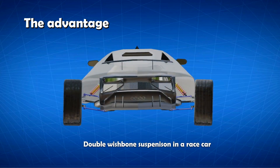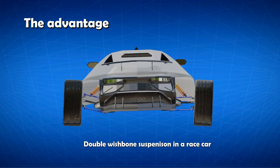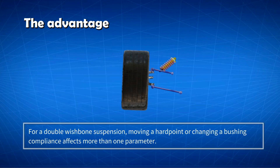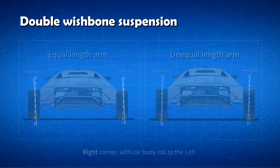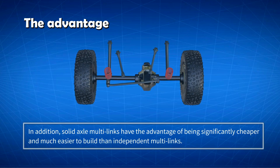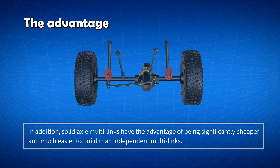This is a significant difference from double wishbones. For a double wishbone suspension, moving a hardpoint or changing a bushing compliance affects more than one parameter. In addition, solid axle multi-links have the advantage of being significantly cheaper and much easier to build than independent multi-links.